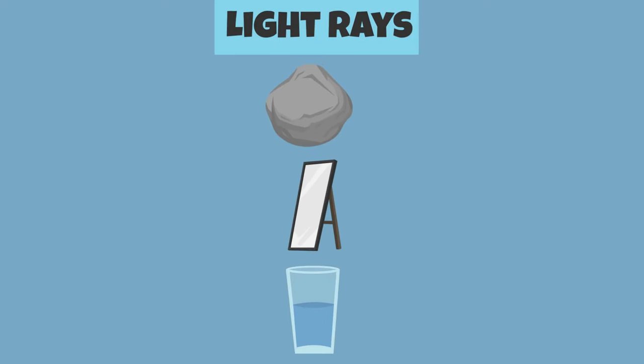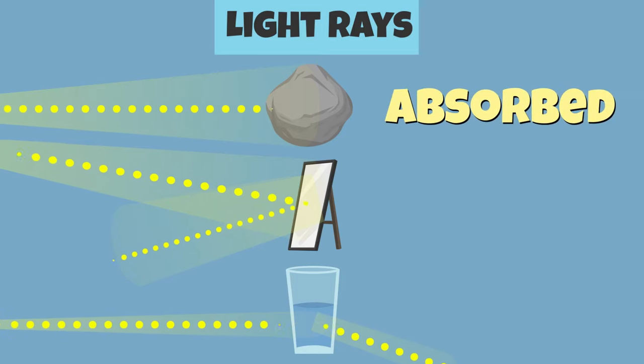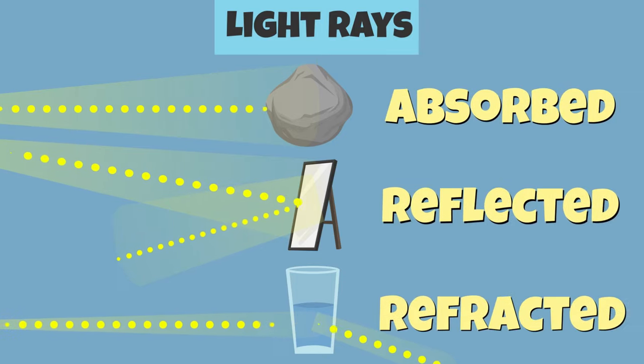When light rays come in contact with an object, they either get absorbed, bounce back, or pass from one medium to another. Light rays can either be absorbed, reflected, or refracted. When light rays bounce off of an object, we call this reflection.